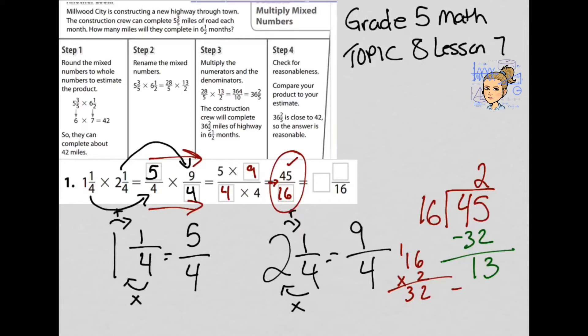So my whole number is going to be 2, 13 becomes my numerator and 16 becomes my denominator. I have to make sure that I can't simplify or put 13 sixteenths in any lower terms. I cannot because 13 is prime, so it will only be divisible by 1 and itself. So my final answer is going to be 2 and 13 sixteenths.